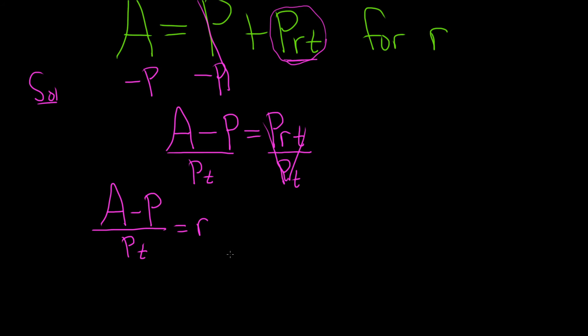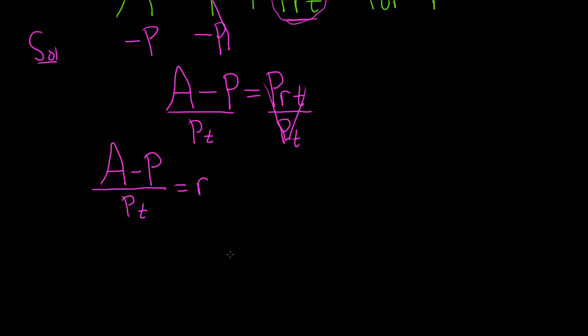And that would be a totally OK answer, except most people like to write what they've solved for on the left-hand side. So we can write this as r equals A minus P over PT. And that would be the final answer.